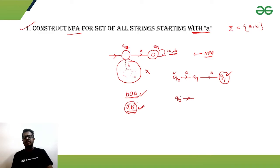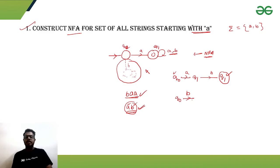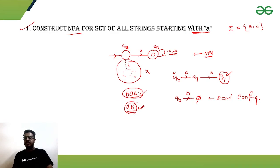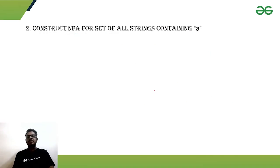For the string 'baa', from the initial state if we give 'b', there is no production rule defined. In the NFA, from q0 we have only one production rule: if we get symbol small 'a' it is defined, but for small 'b' it is not defined. This gives rise to a dead configuration, similar to the dead states of a DFA. So the string starting with 'b' will not be accepted by the NFA.